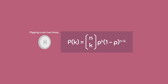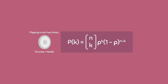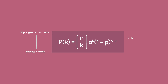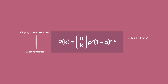If we were flipping a coin 2 times, and if a success is getting heads, we can use this formula to calculate the probabilities for each number of successes. This means that k will be equal to 0, 1, or 2. In this case, k cannot exceed 2 since we are only flipping the coin twice.